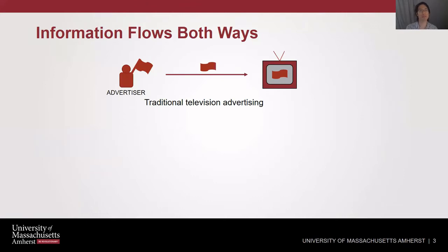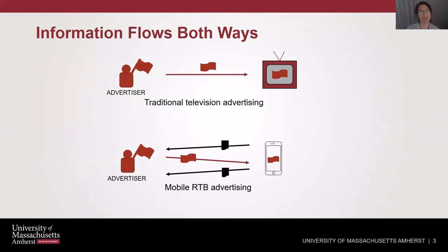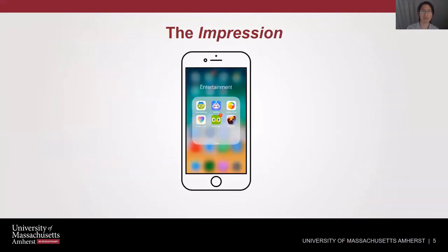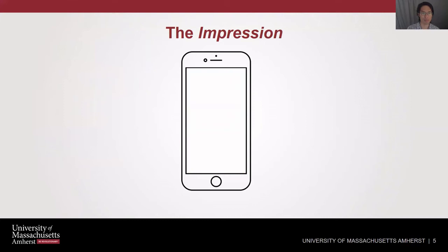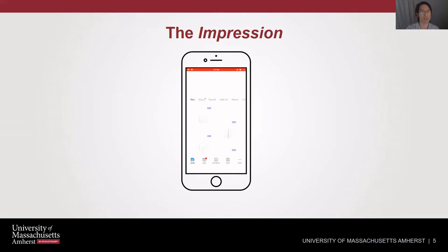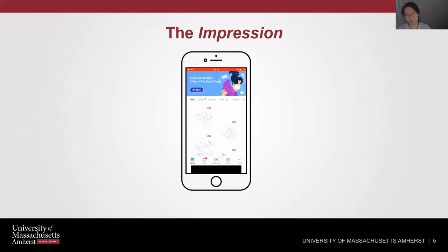In comparison to traditional advertising where an advertiser sends an ad to a TV and expects people to watch it, we have mobile RTB advertising where there's a two-way flow of information. What we're really focused on is the impression — the actual showing of the ad. When a phone opens an app, every 30 seconds at the bottom there will be a refresh of the ad, and during that refresh there's a bidding process that happens, followed by the loading of the ad.